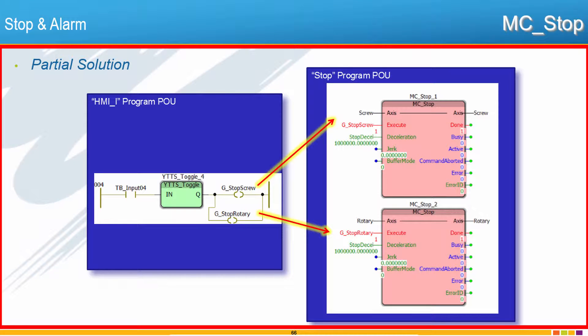Like we've done before with the other program POUs, we'll use the existing HMI Toggle Boolean Interface to stop both the screw and the rotary motor at the same time. MC Stop is pretty straightforward, not really any fancy features. There's the Execute Input and the Decel Rate. And we'll just stop both axes at the same time. So please go ahead and build this and test it out.